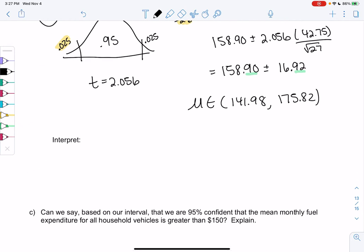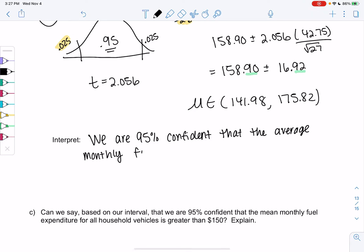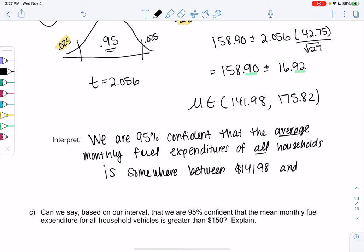Interpreting is probably more important than just mindlessly writing numbers down. We are 95% confident that the average monthly fuel expenditures of all households is somewhere between $141.98 and $175.82. All and average are important words in this sentence. We don't know the exact average because we only had a sample, but we're pretty confident that the average is within this interval.